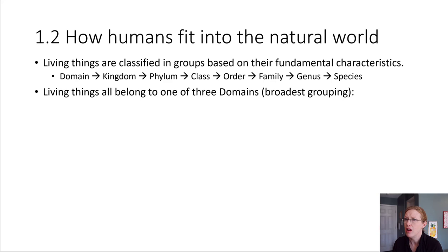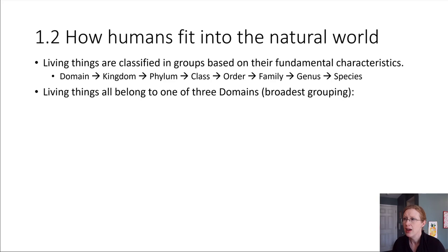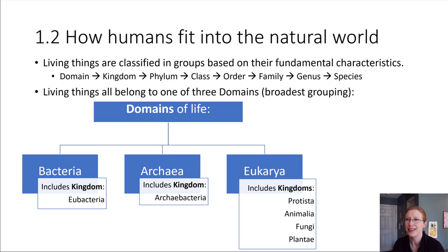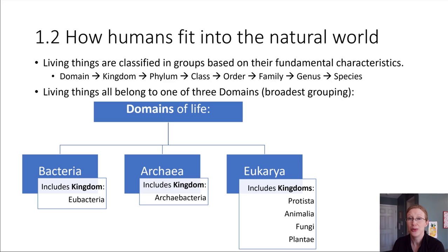What we have on screen is the classification groupings from broadest down to very specific. The broadest grouping is the domain, which describes whether there's a nucleus present in the cells of these living things. The nucleus of a cell is just the place where the DNA is kept. Some cells have a nucleus — a little shell around the DNA. Others do not; the DNA just kind of floats freely.